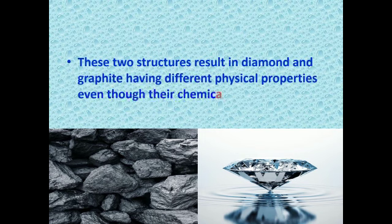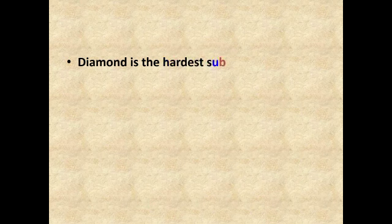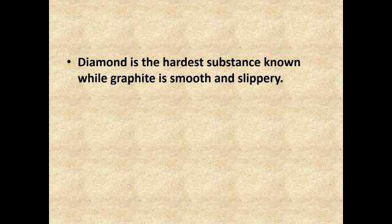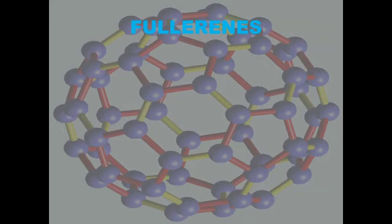These two structures result in diamond and graphite having different physical properties even though their chemical properties are the same. Diamond is the hardest substance known, while graphite is smooth and slippery. Graphite is a good conductor of electricity unlike other non-metals.